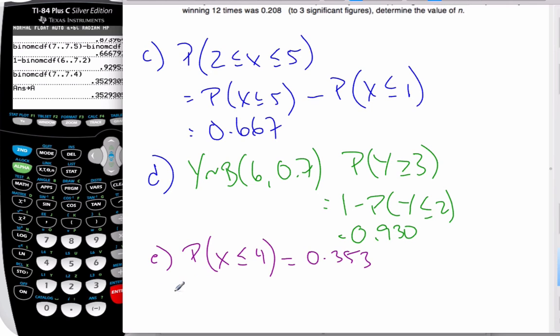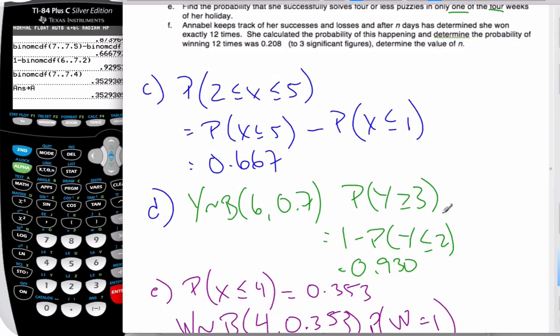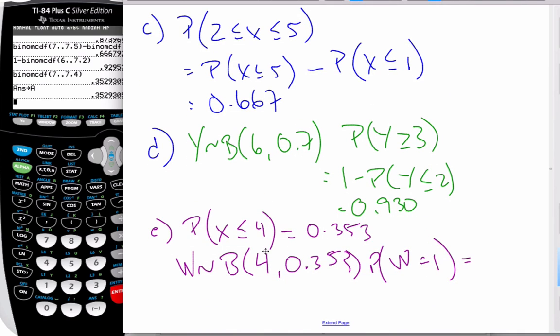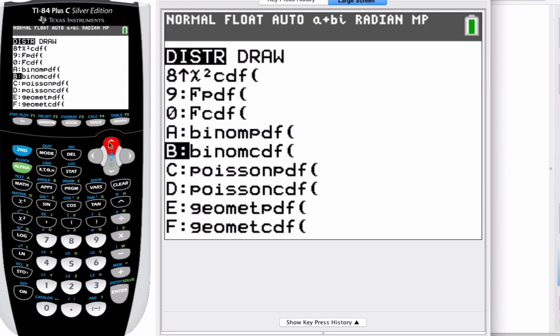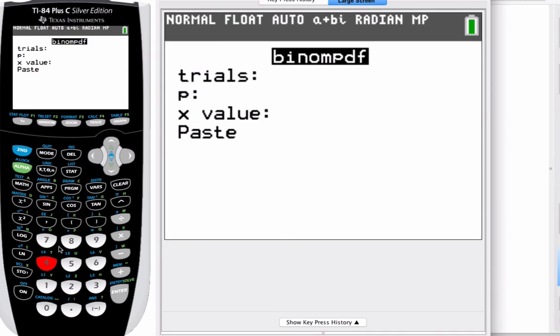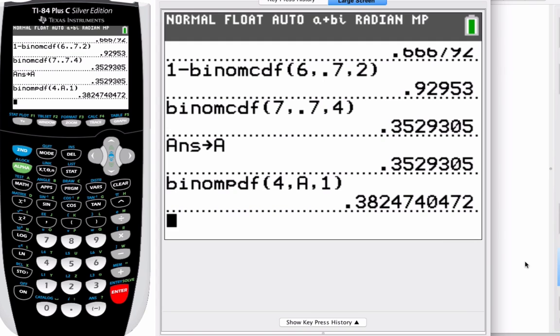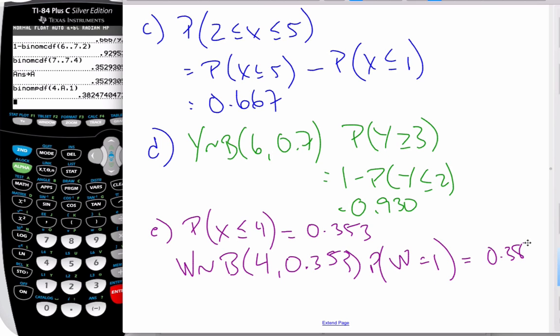But now I have four weeks. So now I have a new binomial situation. And so I'm going to call this W belongs to binomial. I have four weeks. My probability of success is 0.353. And I am looking for the probability that W is equal to one. Only one of the weeks. So, now that I have my new distribution, I can go to my calculator, go to my variables, go to binomial. This is a PDF, because I want a specific one. I have four weeks. My A is my probability. And I'm looking at one. And so my probability is 0.382.